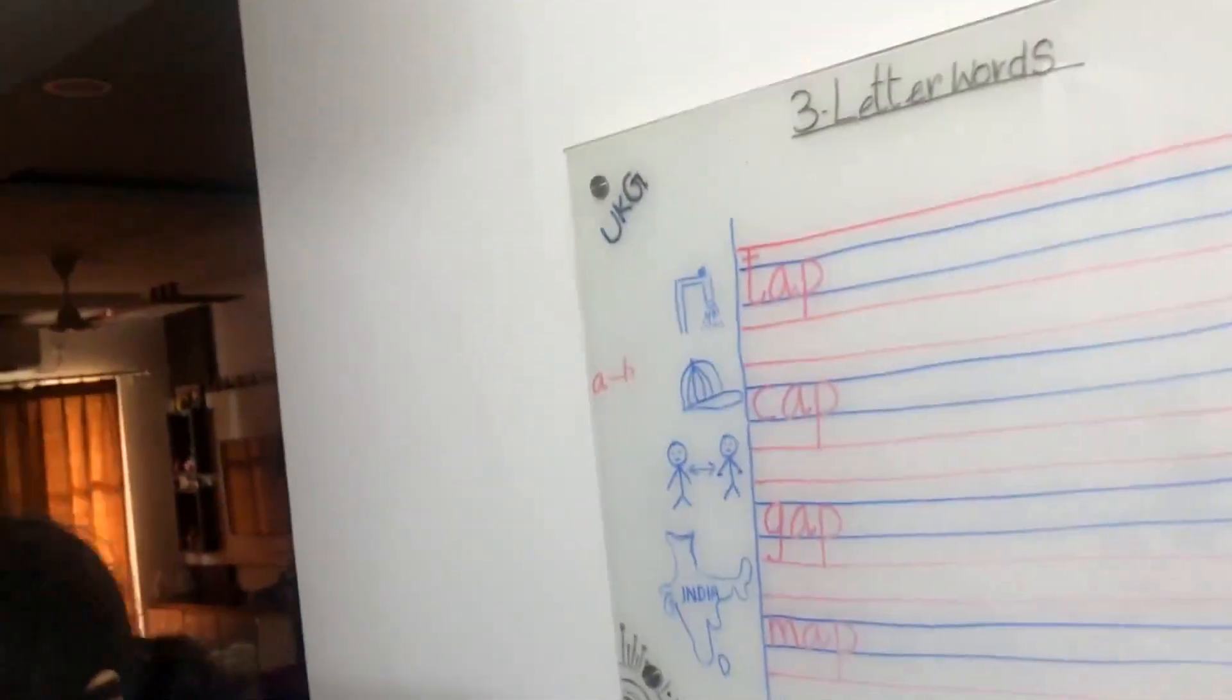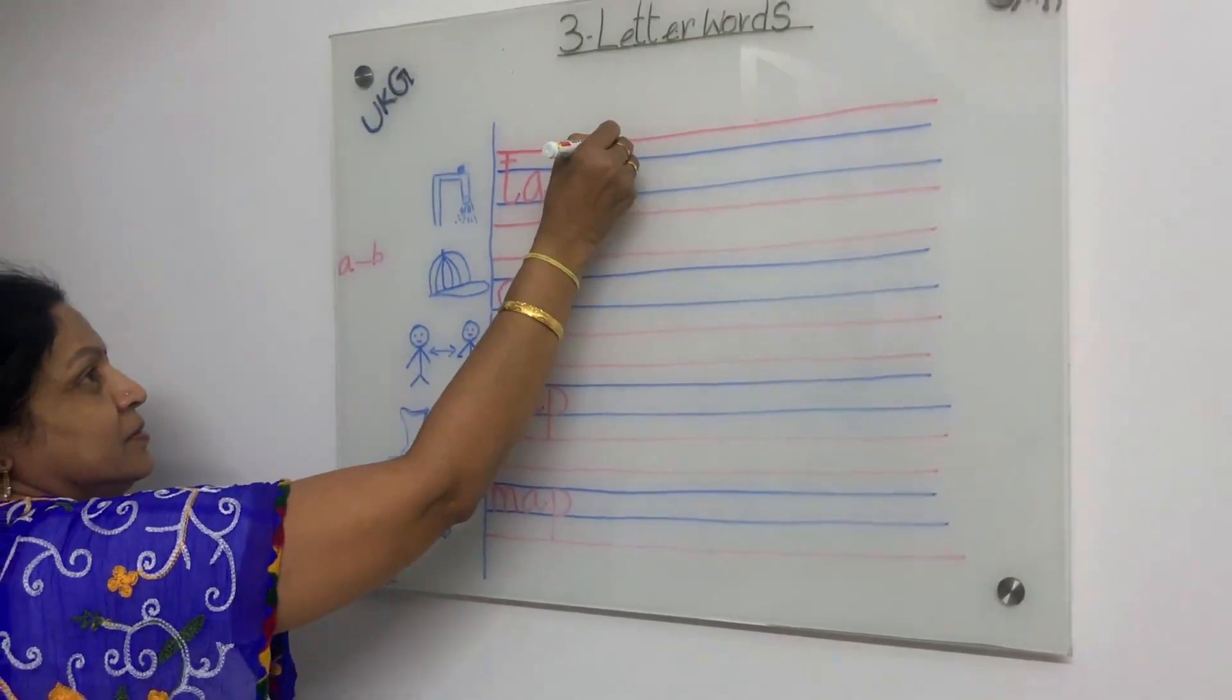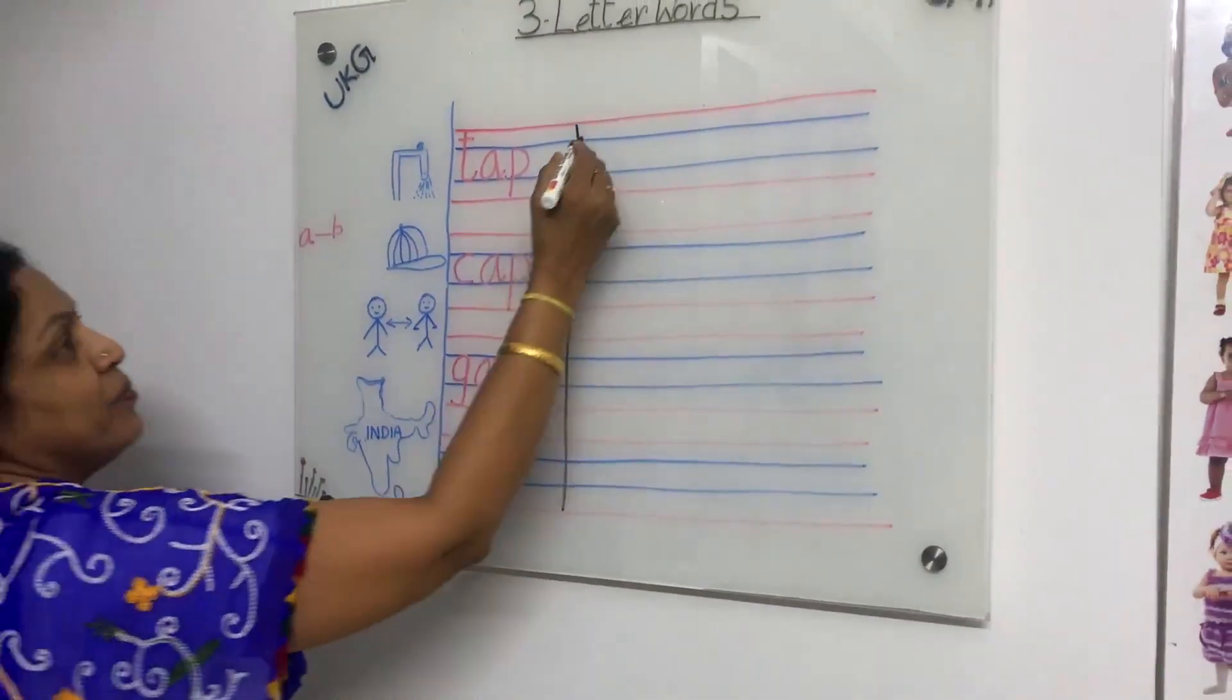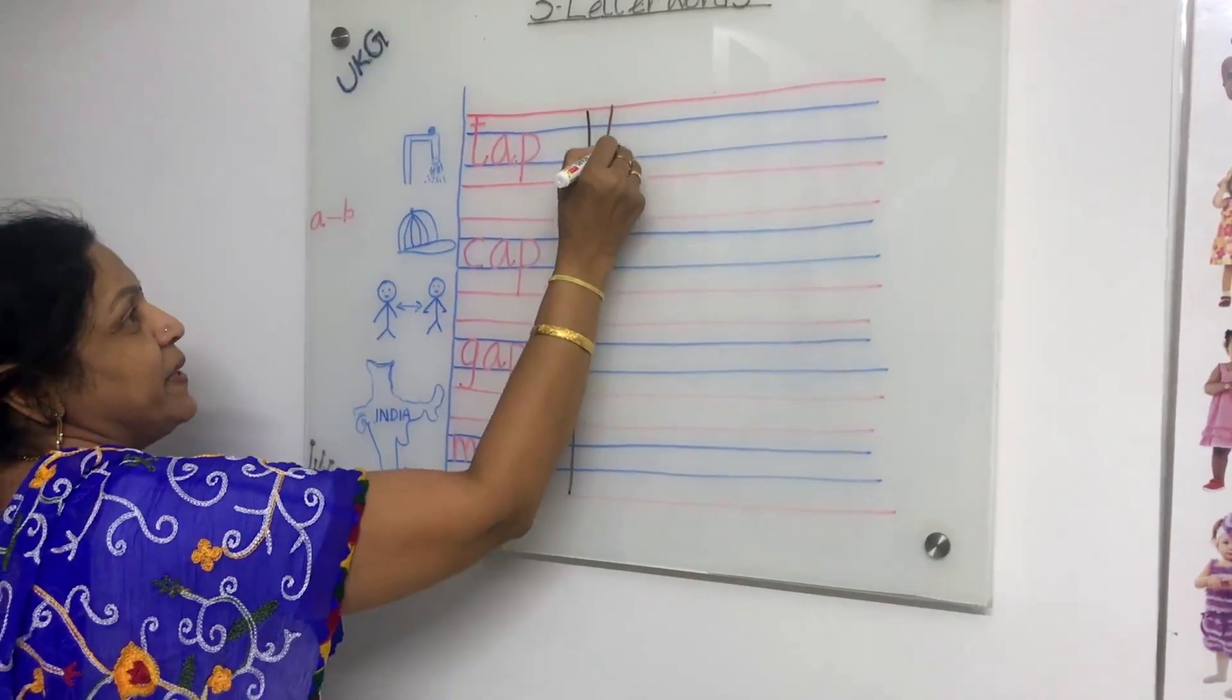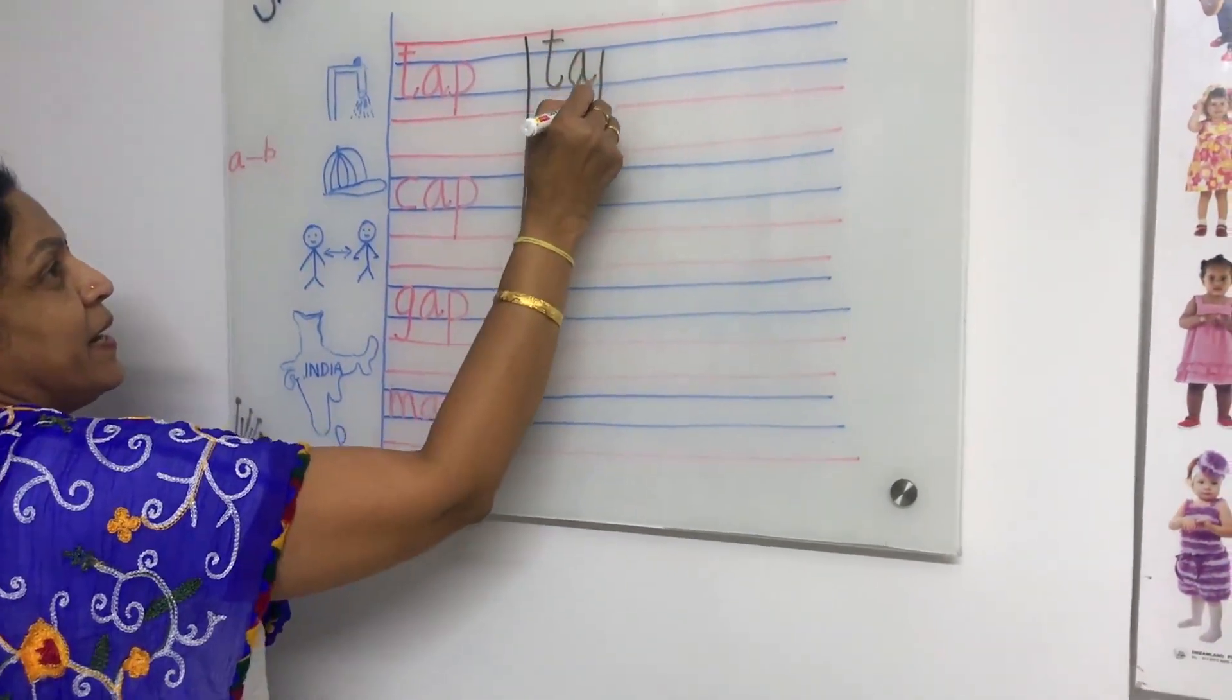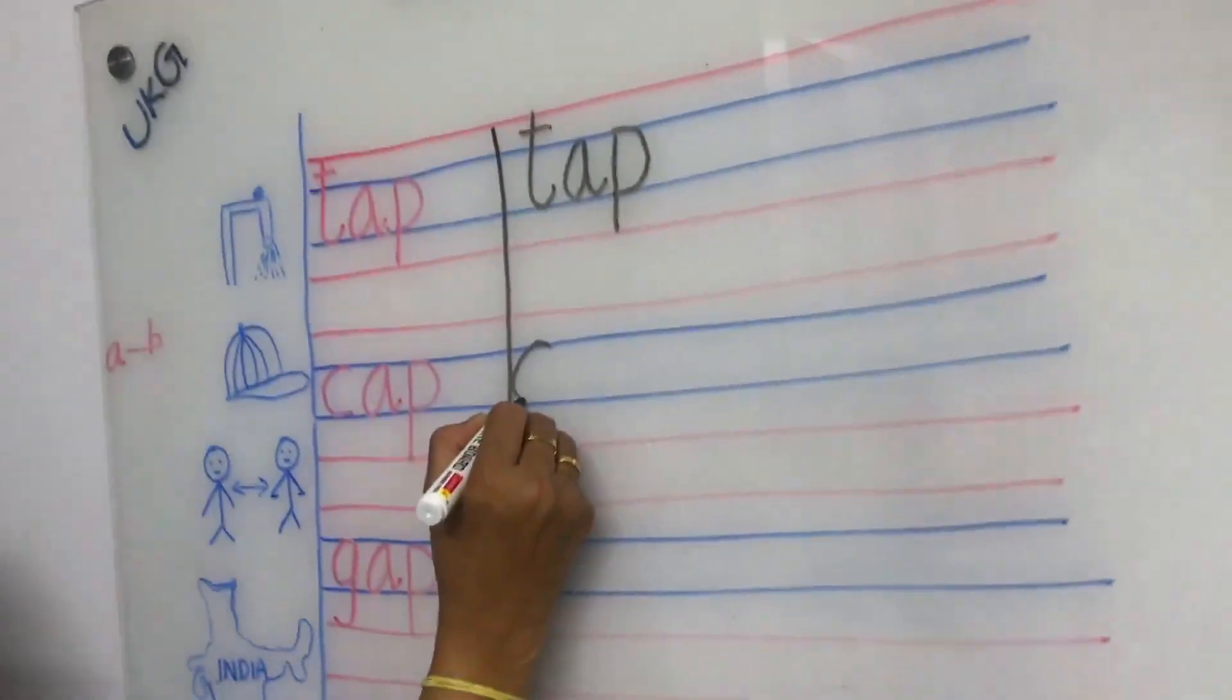See, now children, what you have to do? Put the line here and write one more time. T, A, P, tap. Say and write, Nana. Say the spelling and write the word. T, A, P, tap.